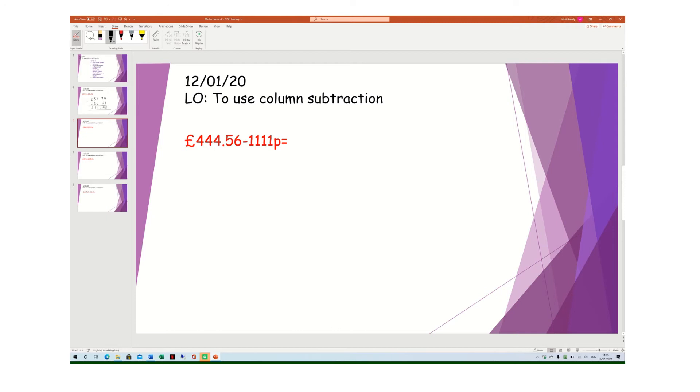So if I know there's 100 pennies in a pound, I need to use my thinking skills. Here I've got 1,111p. So all I do is just divide it by 100. Now I know that 1,111p becomes £11.11. Does that make sense?